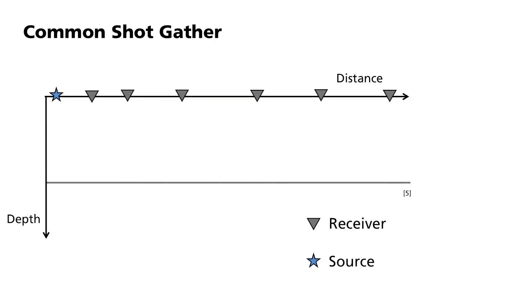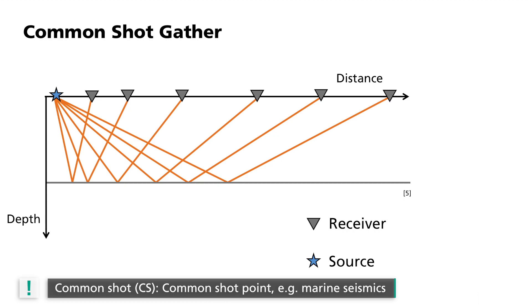In marine seismics, hydrophones are typically pulled behind a source on streamers. The geometry used here therefore corresponds to a source with a constant spacing to the receivers. This geometry is referred to as common shot gather, or one with a common shot position.